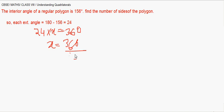So the number of sides will be 15. We did the same but as the interior angle is given we calculated the exterior angle first and then we got to the number of sides of the polygon.